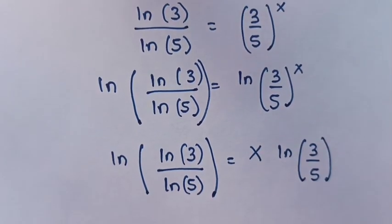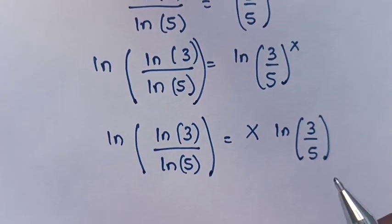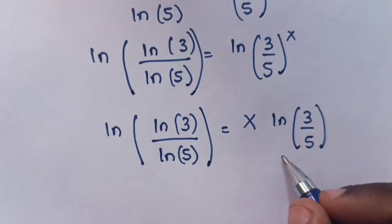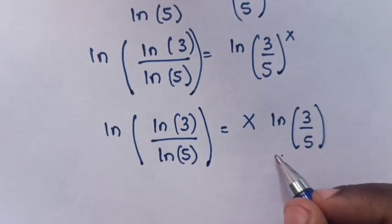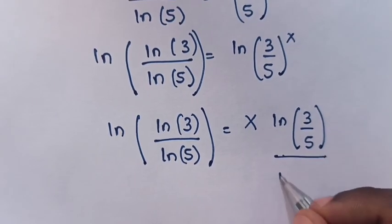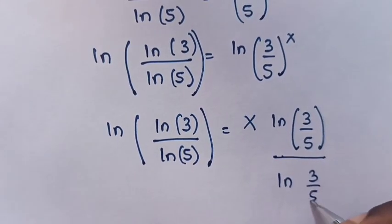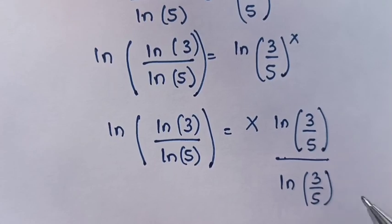So the next step will be to divide both sides by log(3/5).